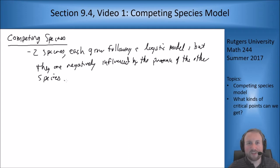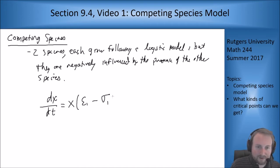So if they're sharing a food source and they're competing over this resource, that's where you get this sort of setup. So what kind of equations can we get out of this interaction? We get something like dx/dt equals x times epsilon_1 minus sigma_1 x minus alpha_1 y.